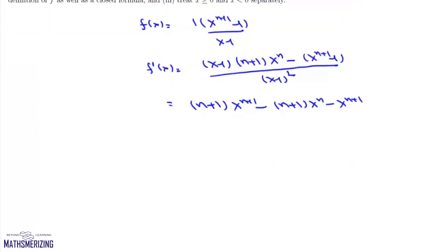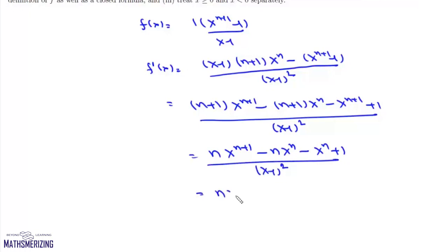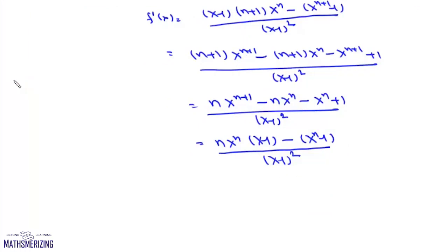Simplifying the numerator: x^(n+1) terms cancel, leaving n·x^(n+1) minus n·xⁿ minus x^(n+1) divided by (x−1)², which we write as [n·xⁿ(x−1) − (x^(n+1) − 1)] upon (x−1)². Alternatively, differentiating directly: f'(x) equals 1 plus 2x plus 3x² plus ... plus n·x^(n−1).